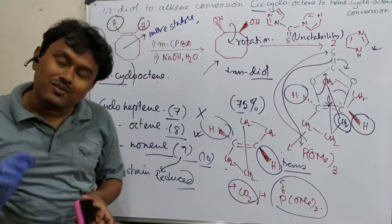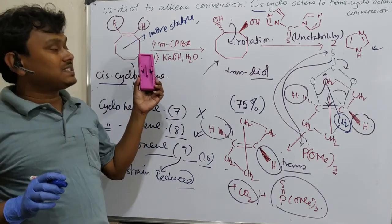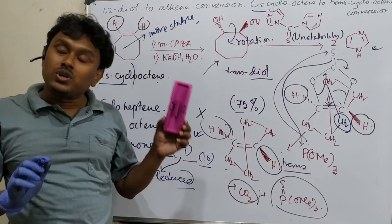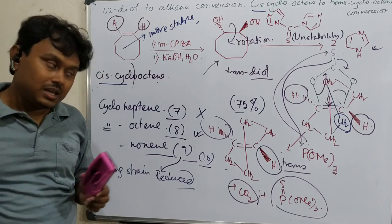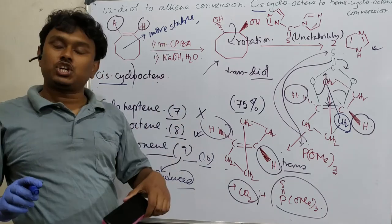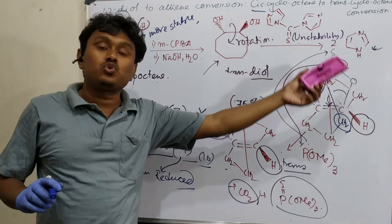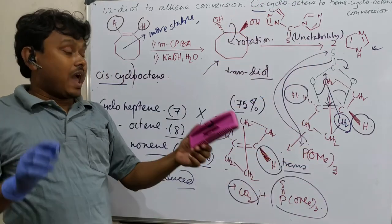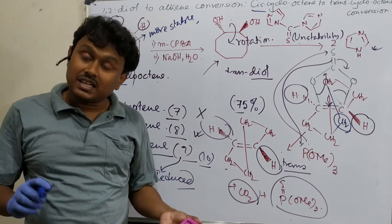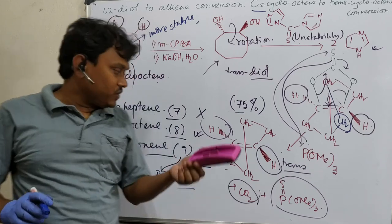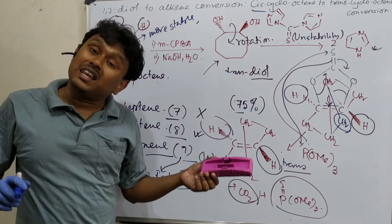So this is the overall discussion for today. What have we learned? We have learned about 1,2-diol (or glycol) to alkene conversion, and as an application of this methodology, cis-cyclooctene to trans-cyclooctene conversion — including the importance of this process, why it is difficult, and the stability of different trans-cycloalkenes.